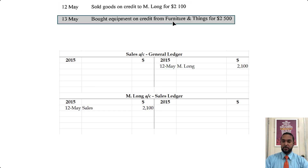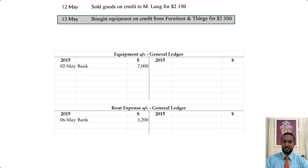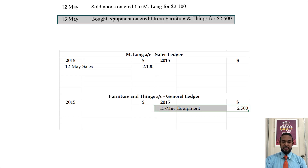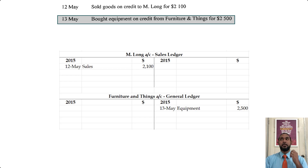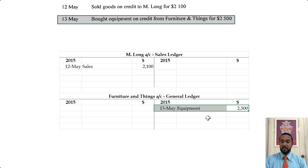Next, we bought equipment on credit from Furniture and Things for $2,500. Equipment is an asset, so we debit the asset account and credit Furniture and Things because the value came from there. More properly: we debit equipment because equipment is an asset and it's going up — to record an increase in an asset you debit it. Furniture and Things is now a creditor — you owe them money, which means a liability is increasing, so you credit the liability account.